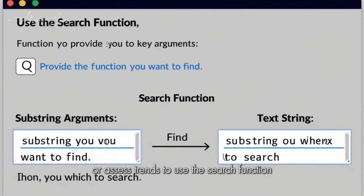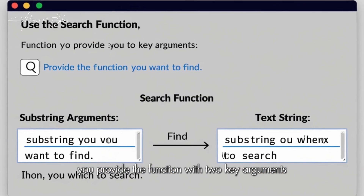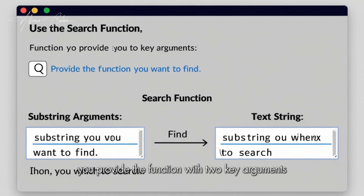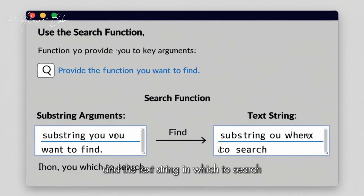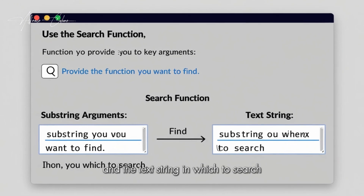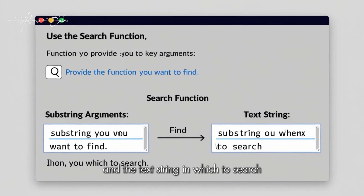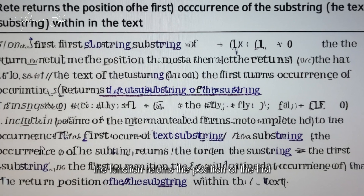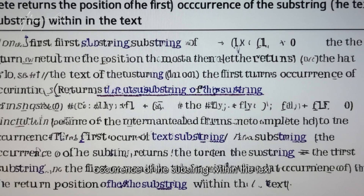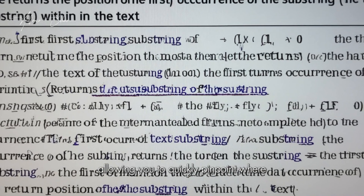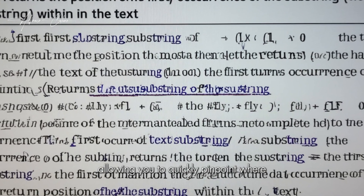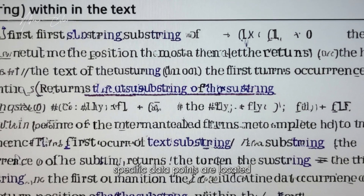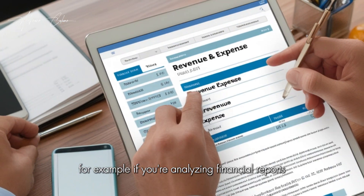To use the search function, you provide the function with two key arguments: the substring you want to find and the text string in which to search. The function returns the position of the first occurrence of the substring within the text, allowing you to quickly pinpoint where specific data points are located.